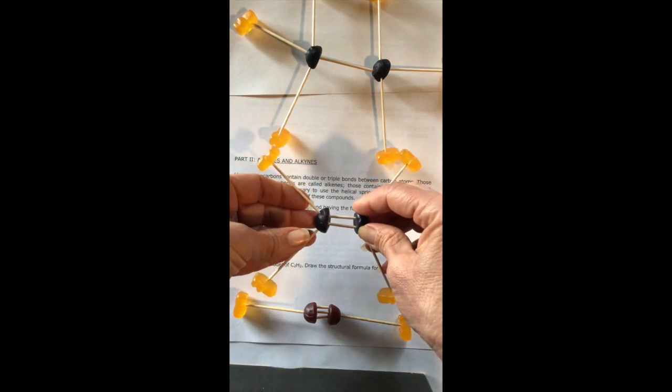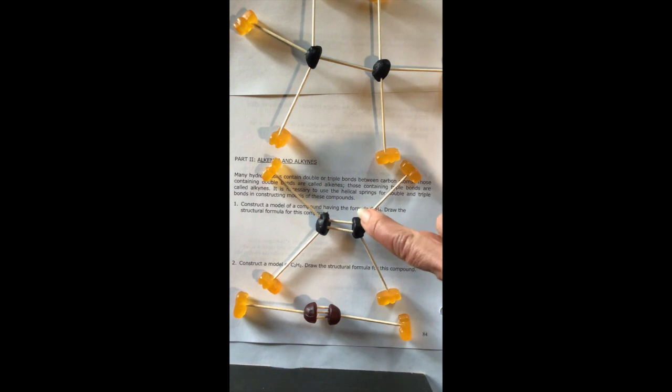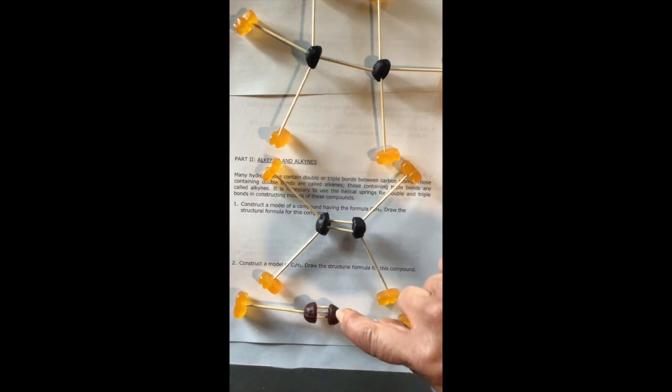Notice with all of the compounds I created, I'm still following my bonding rules. Carbon has four bonds. If I look at the one that I'm pointing to, it's got a double bond which would represent two bonds and two single bonds, giving it four bonds. My triple bond down here, my carbon has the triple bond which would represent three bonds and a single bond. So carbon is still following our bonding rules, and hydrogen follows the bonding rules of only having one bond between hydrogen and the carbon.